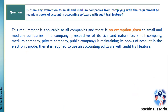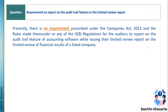First question: is there any exemption to small and medium companies from complying with the requirement of maintaining books of account in accounting software with an audit trail feature? The answer is Rule 11G is applicable to all companies — there is no exemption given to small or medium companies. Irrespective of size or nature of business, if you are registered under the Companies Act, you need to comply with Rule 11G.